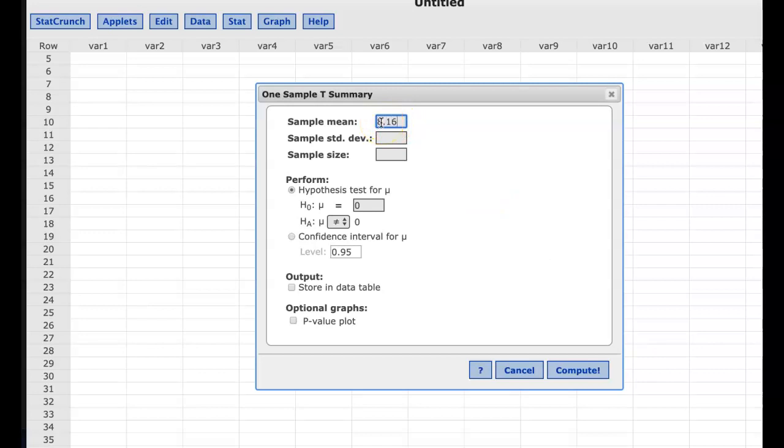So 8.16. So the sample data looks like it's less than 9.02, but only because it's a sample, we cannot say that's true for the full population yet. We only have evidence to suggest that's the case. And so we would put 9.02 here, and it's less than, and then you run it.